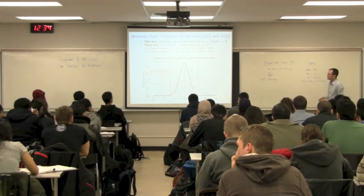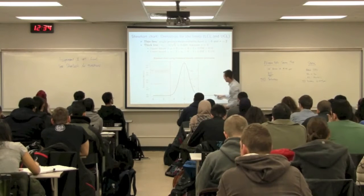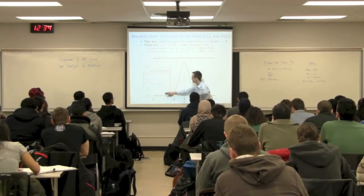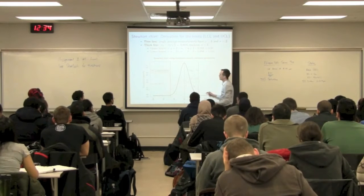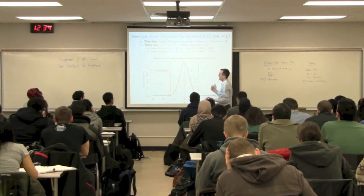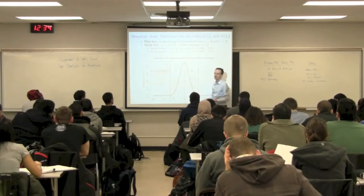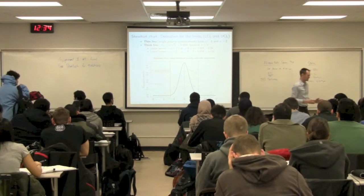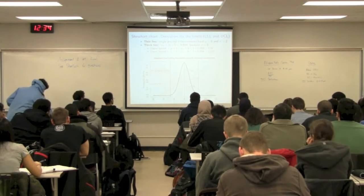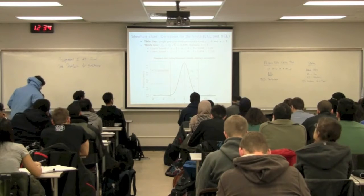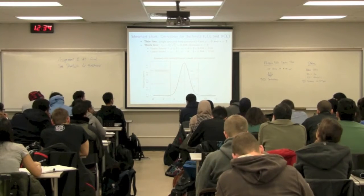We saw last time that if my data from my process comes from the thin-line distribution, the distribution for the averages x-bar comes from the histogram with the thicker line — it's a narrower distribution. One question that always comes up is: how big should my subgroup size be? Should I use two samples, three, four, five?